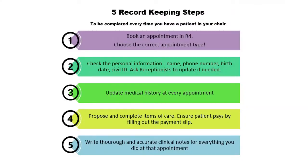The second thing I said I was going to teach you was the five record-keeping steps. Every time you have a patient in your chair, you need to do these five things. The first is you need to book an appointment in R4. It's not enough to contact a patient and tell them to come. You can't keep the appointment in your head. You need to book it in the dental software, and when you do that, you need to book it correctly. We'll talk about that more when we actually do it.